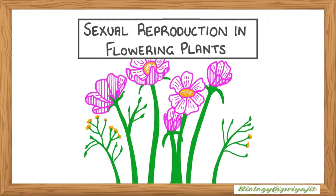Unlike asexual reproduction, this mode of reproduction needs two gametes — one from the male part, or pollen, and another from the female part, or ovule. When they meet, something extraordinary happens: a new life begins, packed in a seed ready to grow into a whole new plant.